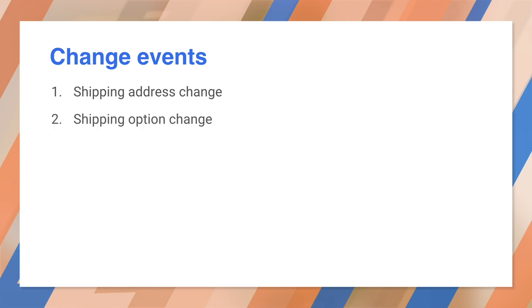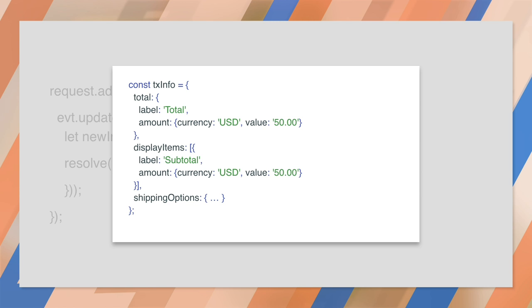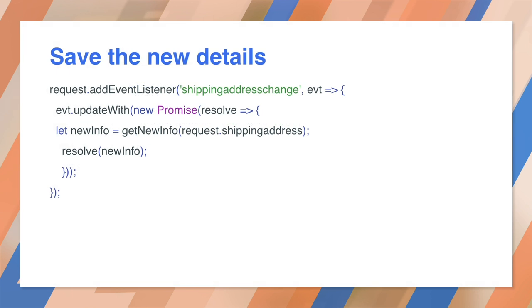Now there's one loose end to tie up: what happens if the user changes their shipping address or options? This may change the total cost and in some cases may change the shipping options. This payment request can emit shipping address change, shipping option change, and payment method change events. You should have event listeners for these and update the payment details accordingly. Remember, we're making the update in the middle of a promise, just as we do installing the service worker. We get the event and call updateWith on it. This takes a promise that resolves to a new transaction details record. It's not all that different from calling cache.addAll from the service worker's install event. The getNewInfo method is something that you would write — it takes some data from the request and builds a new transaction details object. Your code probably needs to copy from the old object to a new one. We resolve the promise with the new details. UpdateWith then updates the payment request and the screen.